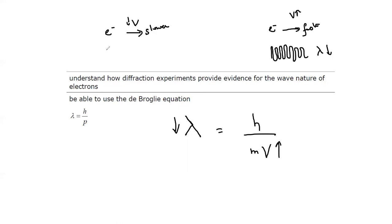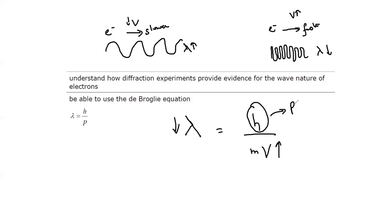An electron moving slower has a longer associated wavelength; one moving faster has a shorter wavelength. Planck's constant h is a fixed constant value. So the formula λ = h/mv relates the wave properties and particle properties: faster-moving particles have shorter wavelengths.